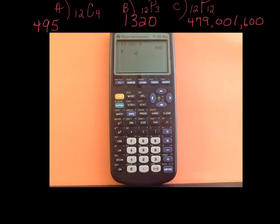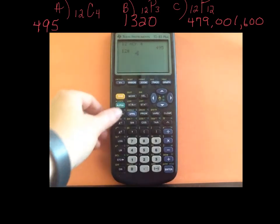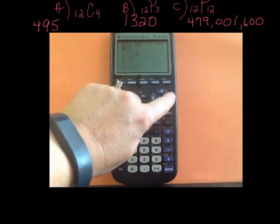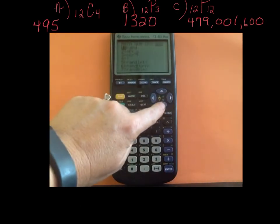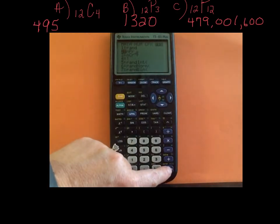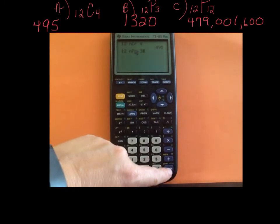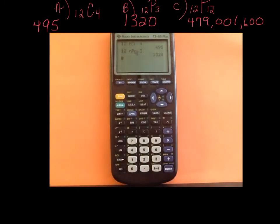For part B, we had a permutation — 12 things, choosing three of them. I'm going to do the same procedure: type in 12, hit MATH, go over to probability, go down to NPR since this is a permutation, give it that second number of three, and hit enter. There's my 1,320.